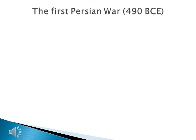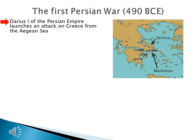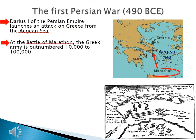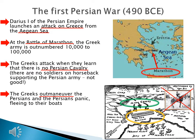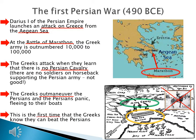Hollywood likes to focus on the Second Persian War, but there was actually a First Persian War in 490 BCE. Darius I launches an attack on Greece from the Aegean Sea — the very sea that Athens was trying to control. At the Battle of Marathon, the Greek army is outnumbered 10,000 men to 100,000 men. But the Greeks are smart — they attack the Persians when they learn there is no Persian cavalry, no soldiers on horseback supporting the troops on the ground. The Greeks outmaneuver the Persians, the Persians panic and flee to their boats. This is the first time the Greeks know they can beat the Persians.